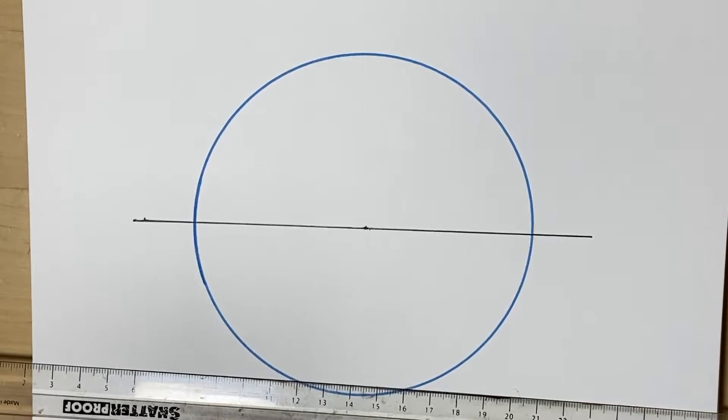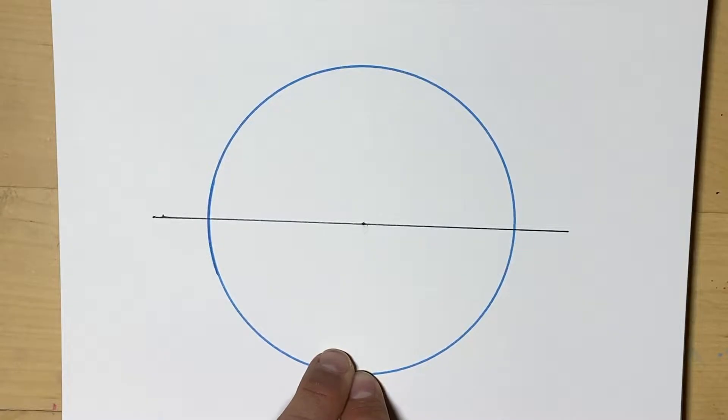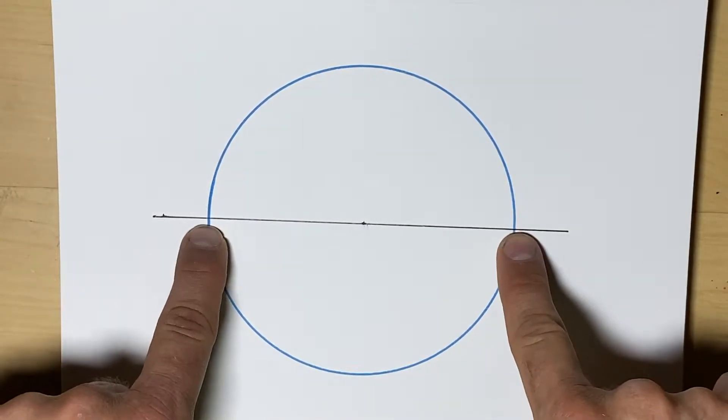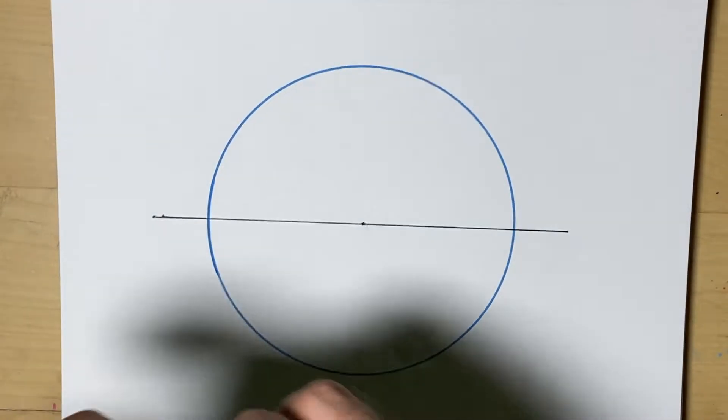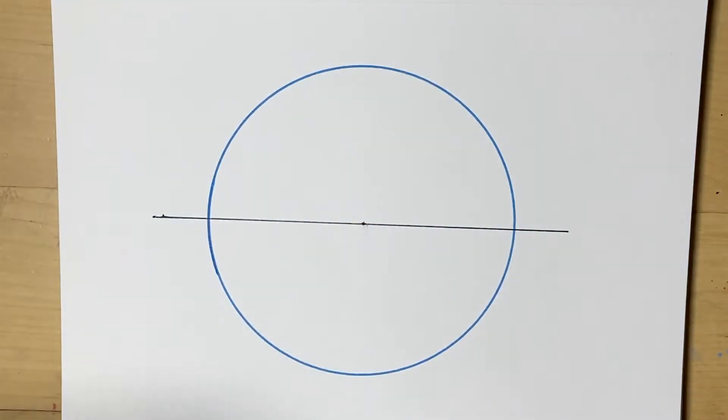So the next step is, how do we cut it into fourths? Well we want to make a perpendicular line, we'll call it a perpendicular bisector, using these two spots right here. So this is the same construction we use when we cut a line in half, or perpendicular bisect something.